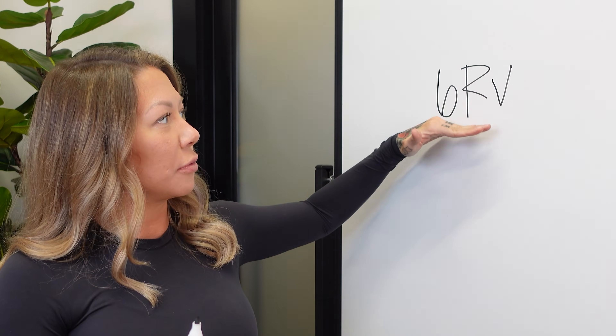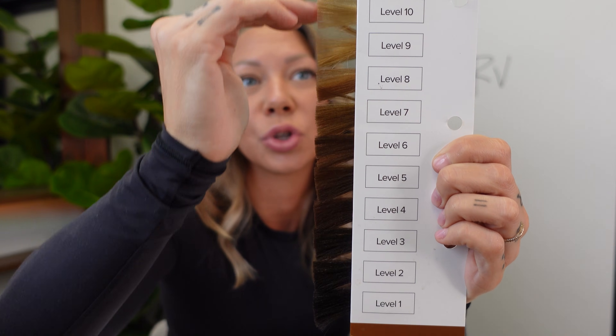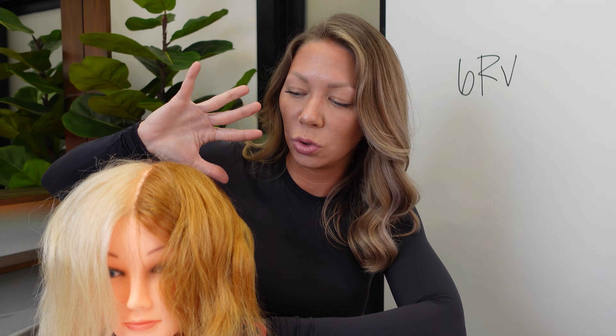Let's use 6RV as an example — this is what it looks like in Paul Mitchell the Color. The 6 represents the level, so this is a level six hair color. That number is only about how light or dark it is, not the tone — not whether it's red, orange, green, or blue. When you're finding someone's level, you're thinking about their hair in black and white. That way you take out the tones, because sometimes tones can trick you into thinking the hair is lighter or darker than it really is.